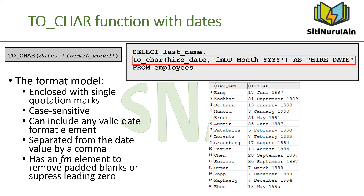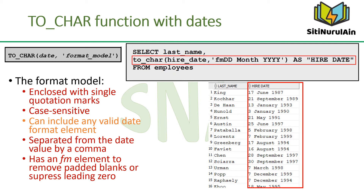To use the TO_CHAR function with dates, the format model must be enclosed with single quotation marks and is case sensitive. The format model can include any valid date format element, but be sure to separate the date value from the format model with a comma. The names of days and months in the output are automatically padded with blanks. To remove padded blanks or to suppress leading zeros, use the fill mode FM element. The SQL statement in the slide displays the last names and hire dates for all employees.